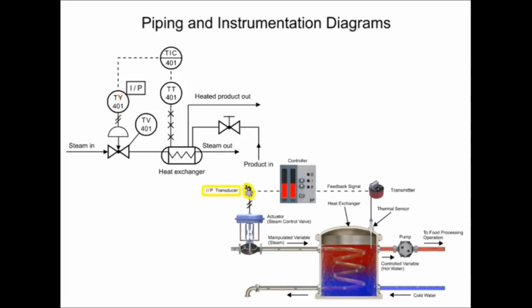The transducer converts an electronic signal to a pressure signal and is indicated by the square containing the letters I and P. The line with diagonal marks designates a pneumatic connection.